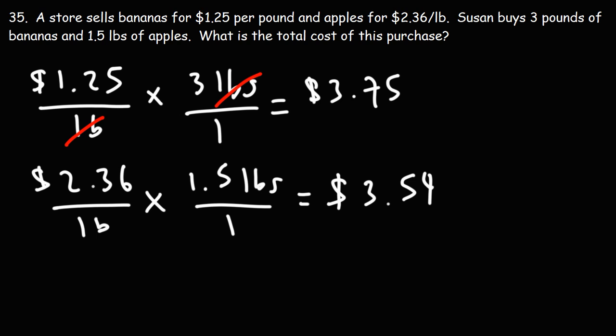To find the total cost of this purchase, we need to add these two numbers. Let's add 3.75 and 3.54. 5 plus 4 is 9. 7 plus 5 is 12. We'll write the 2, carry over the 1. For decimal addition and subtraction, you simply need to line up the decimals.